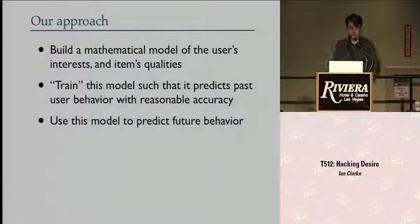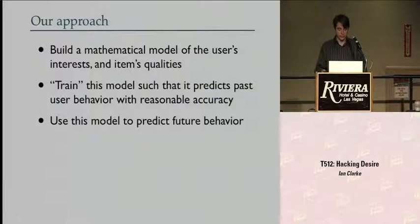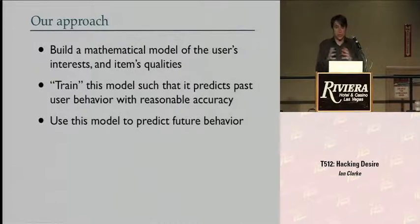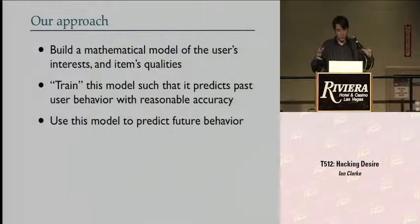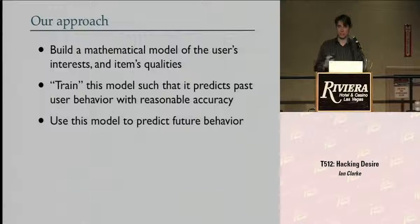Our approach is different to both of these. We want to build a mathematical model of your interests — what you like and what you don't like. Simultaneously, we build a mathematical model of the qualities that particular items have. For any user-item pair, we can combine these mathematical models and it produces a prediction of how much that user will like that thing.